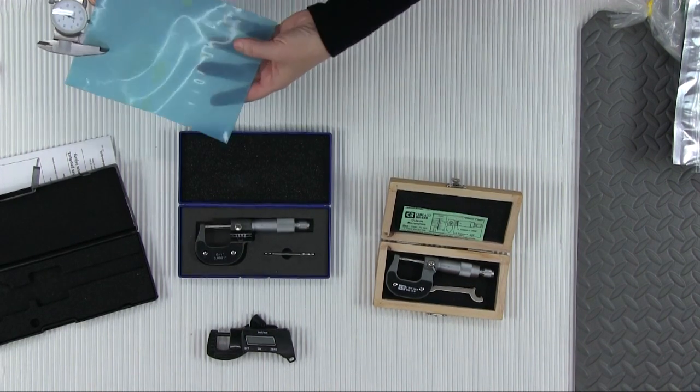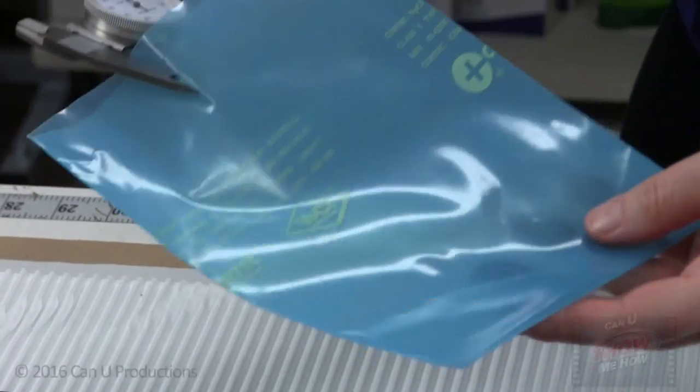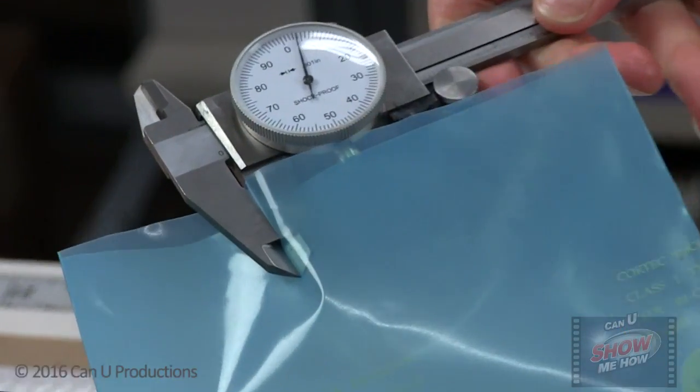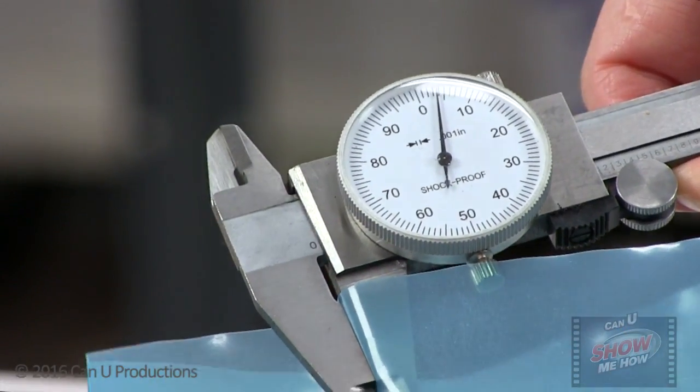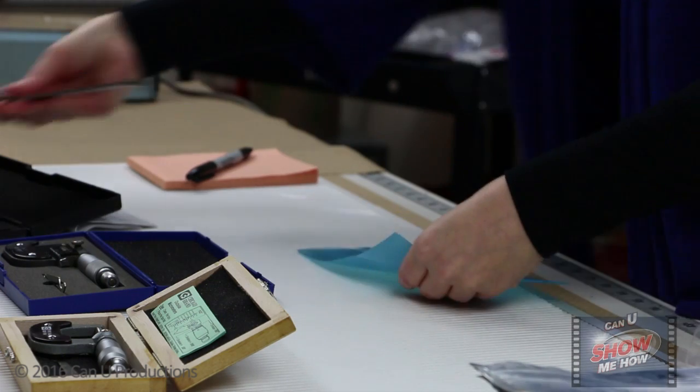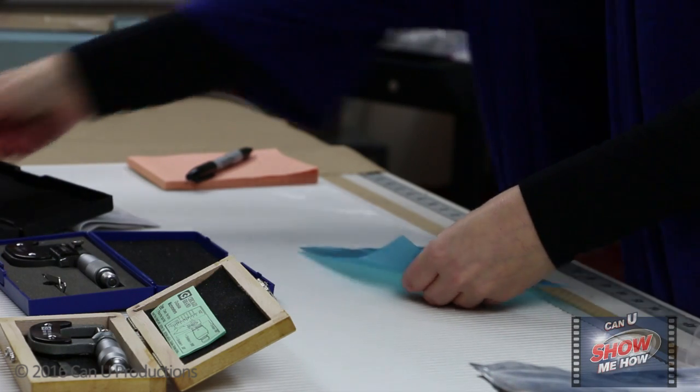Place the bag between the two parts of the micrometer and twist the lever until both sides meet, pressing the polybag in between. This will give you your reading. Here the measurement is four, which is equivalent to four mils thick.